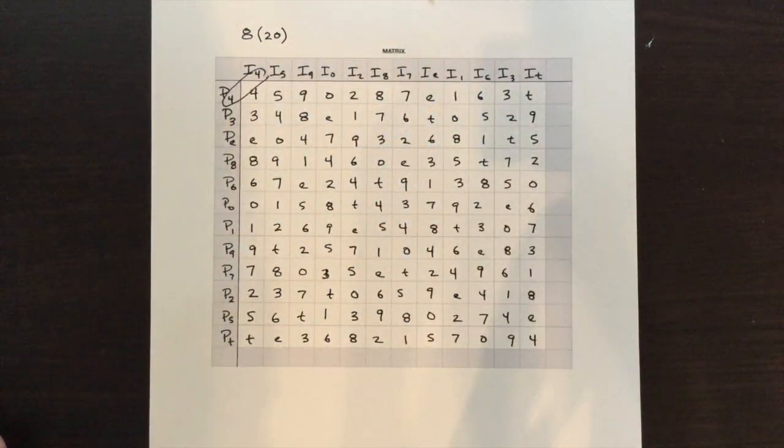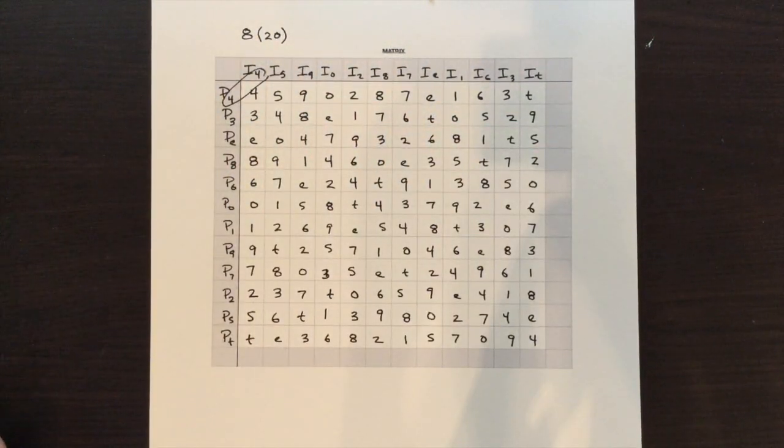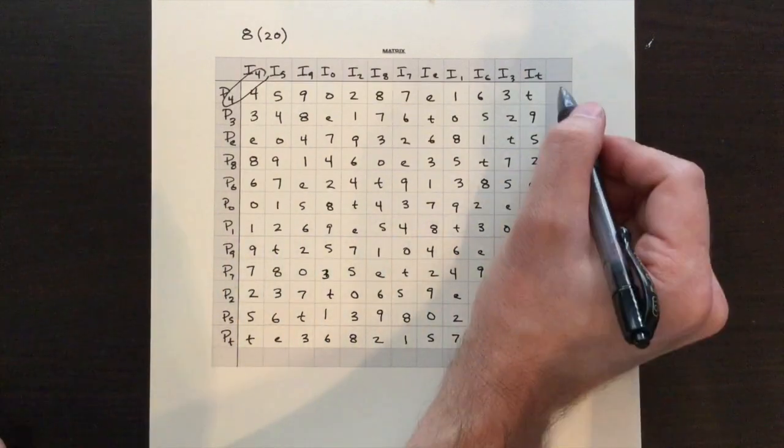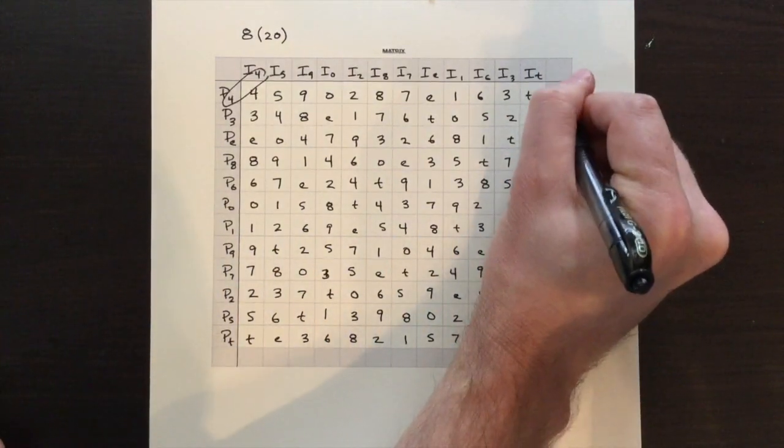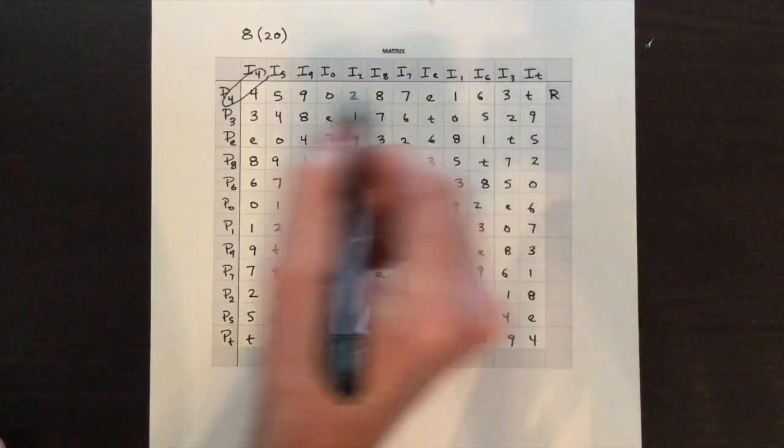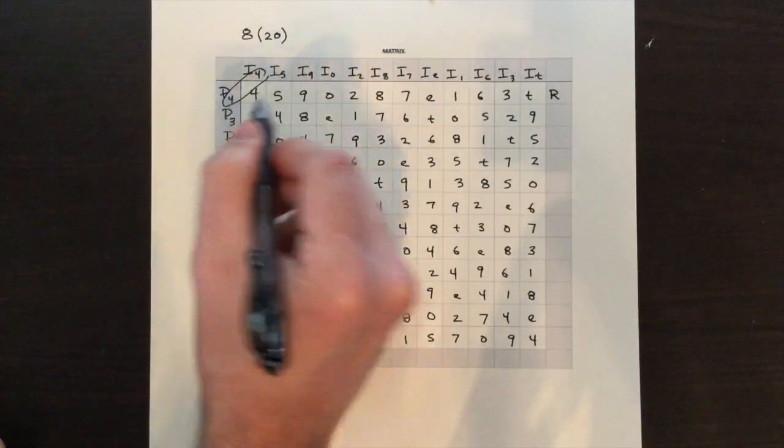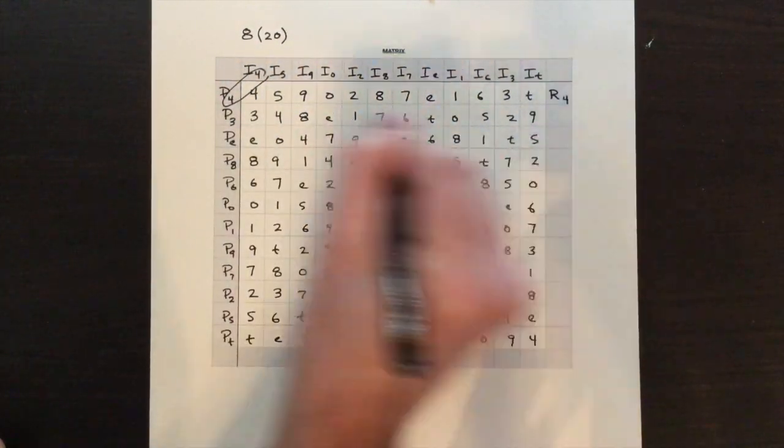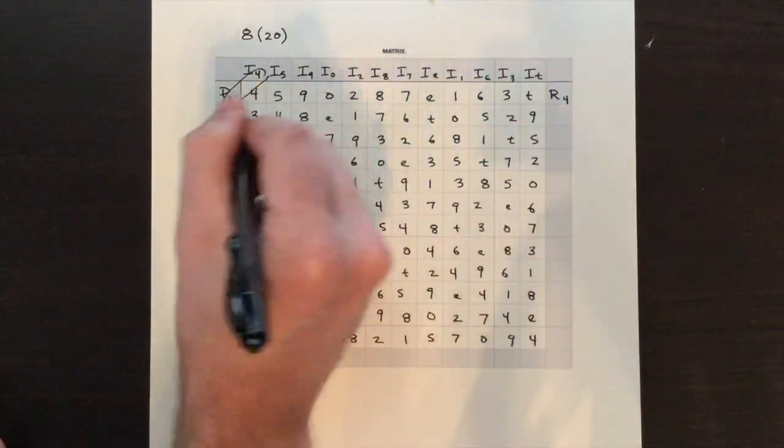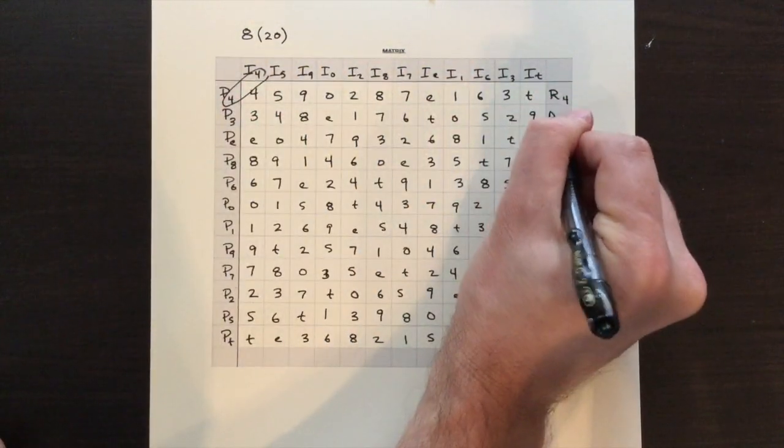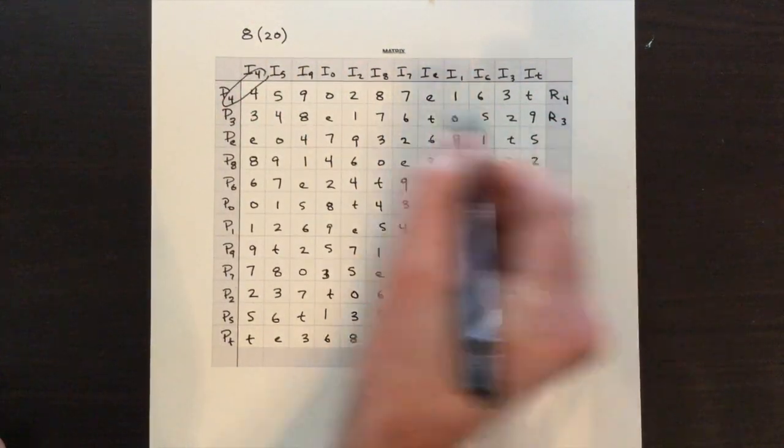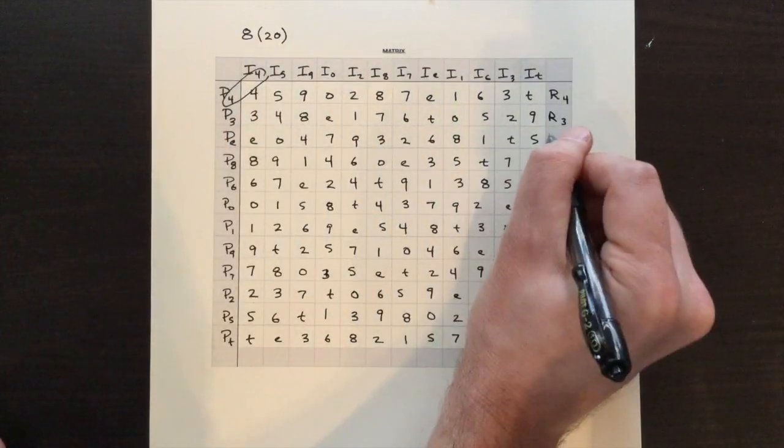And there you have it. The entire matrix is filled. And the last thing I want to do is just label our retrograde rows. And they always correspond with whatever P row we have. So this will be R4 because it's the reverse of P4. This will be R3 because it's the reverse of a retrograde of P3 and so on.